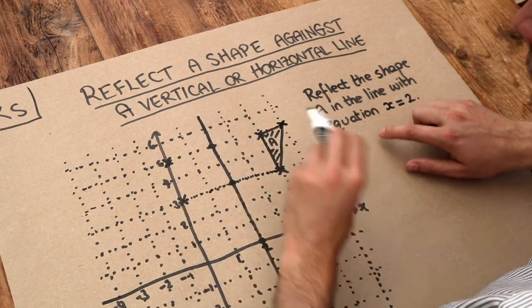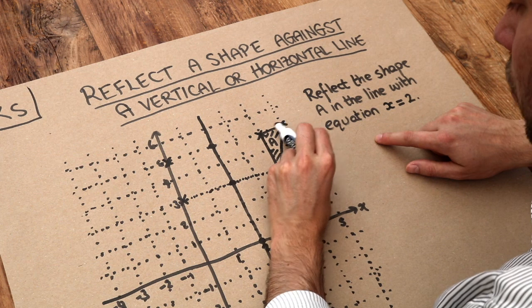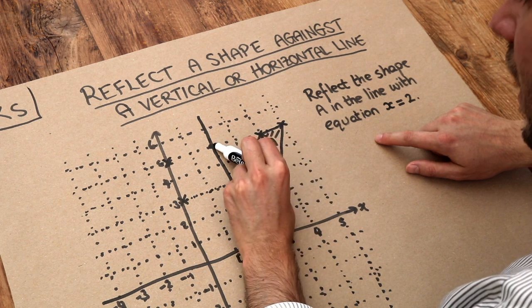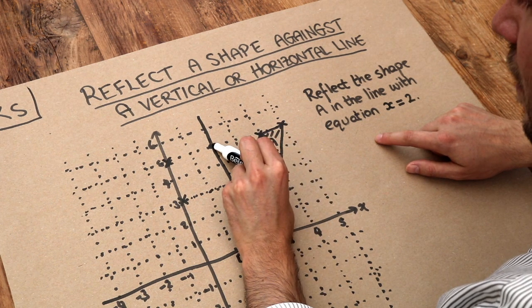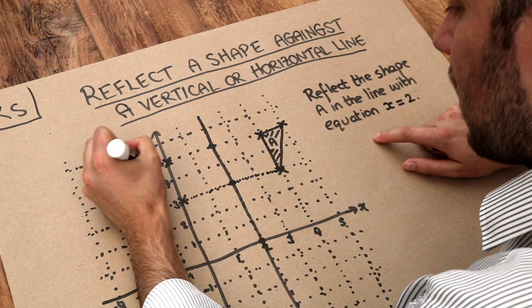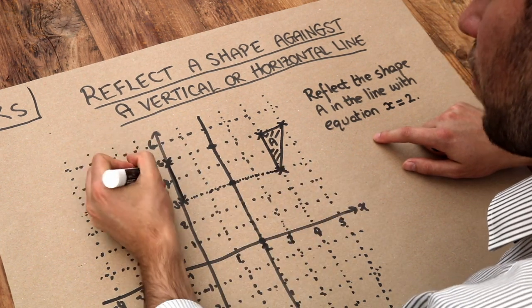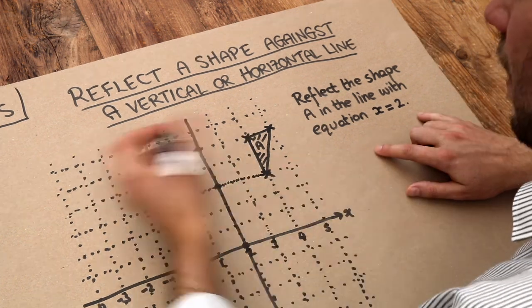And then finally this point here, going directly towards the line of reflection, 1, 2, 3, and the same distance again in the same direction, 1, 2, 3. We end up here, and then we just join those points up. And there's our shape.